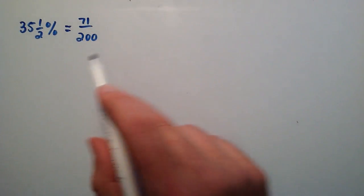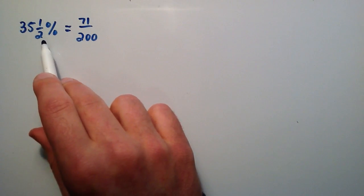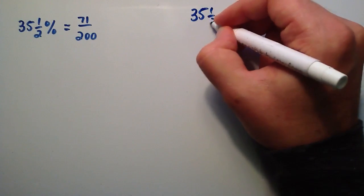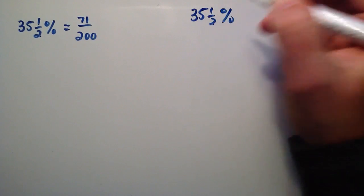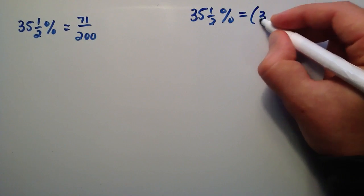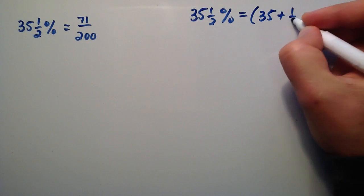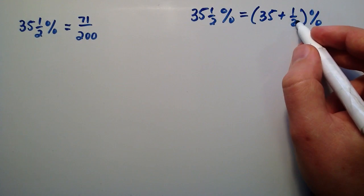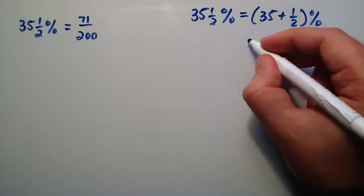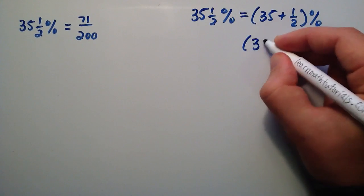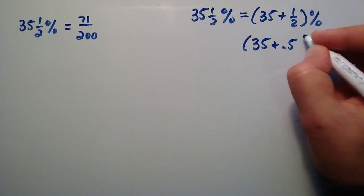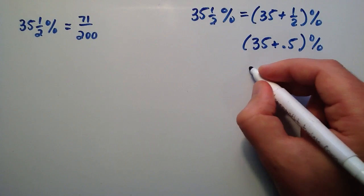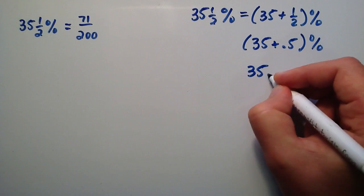So now what we want to do is we want to rewrite this in decimal form. So we're just going to rewrite 35 and 1 half percent. And we're going to rewrite this as 35 plus 1 half percent again. And then realize that 1 divided by 2 gives us the decimal 0.5. So this can be rewritten as 35 plus 0.5 percent. And 35 plus 0.5 is simply 35.5.